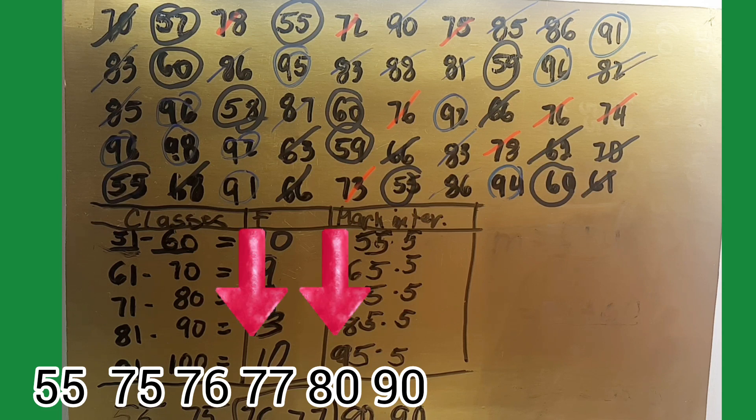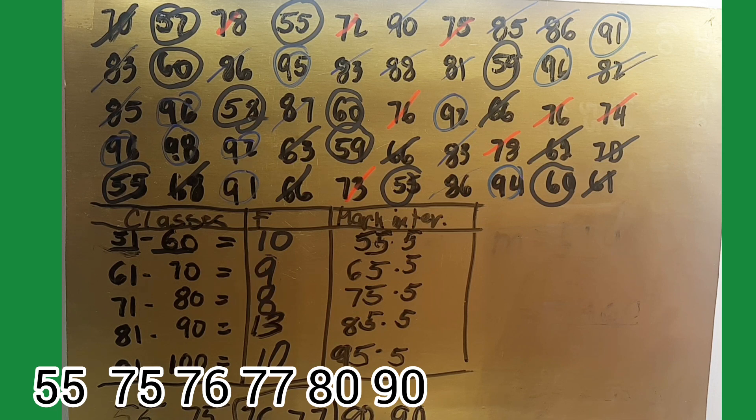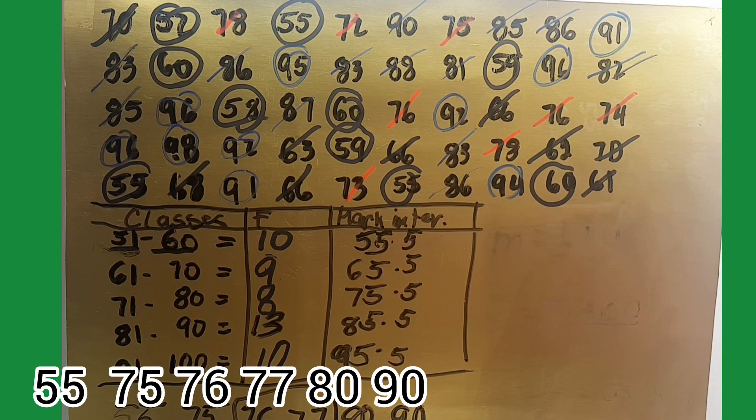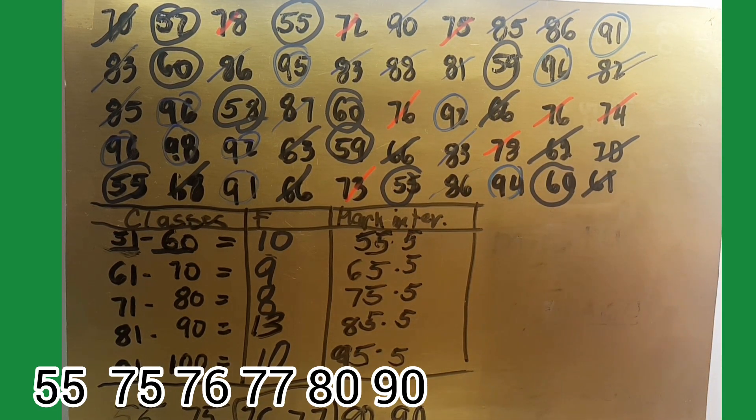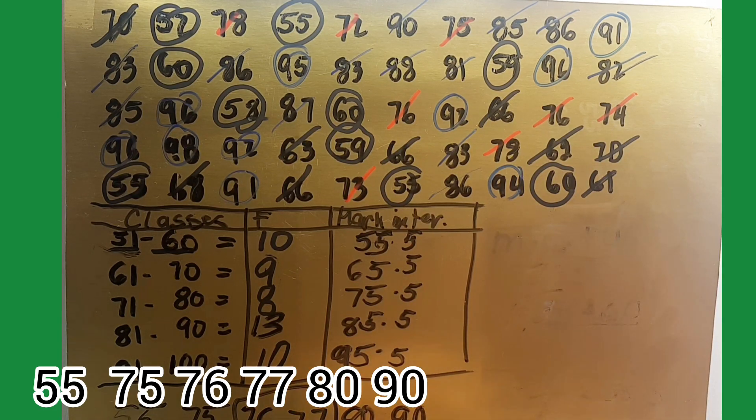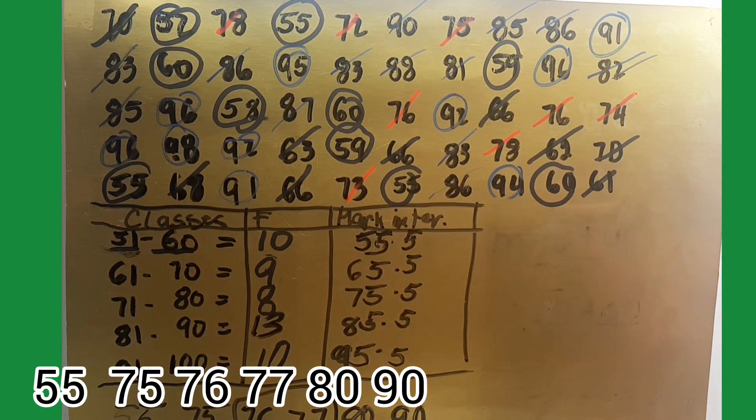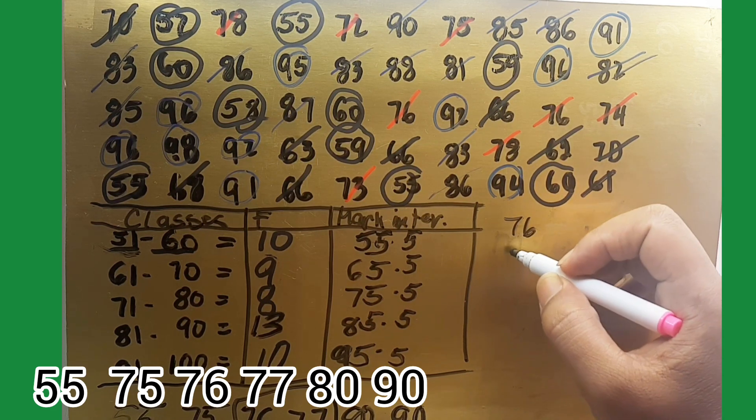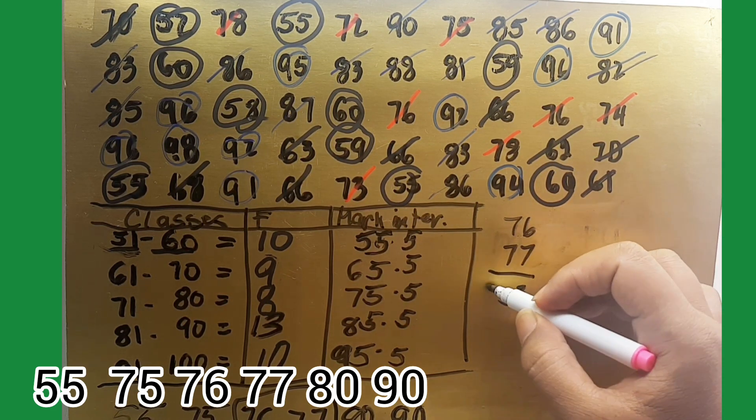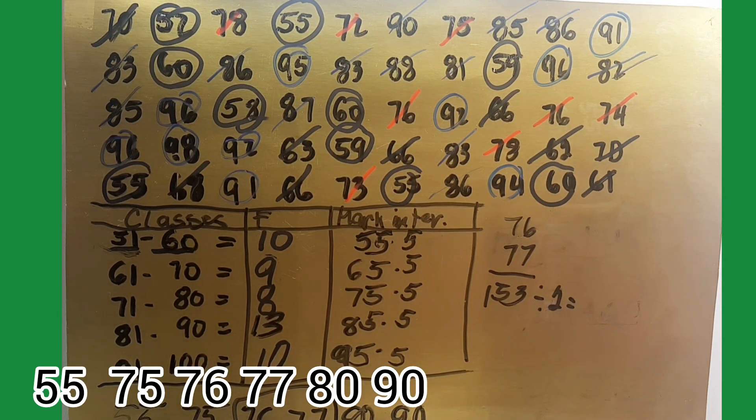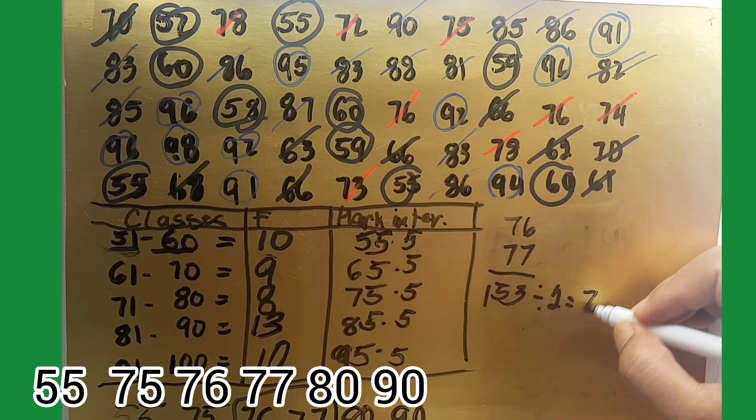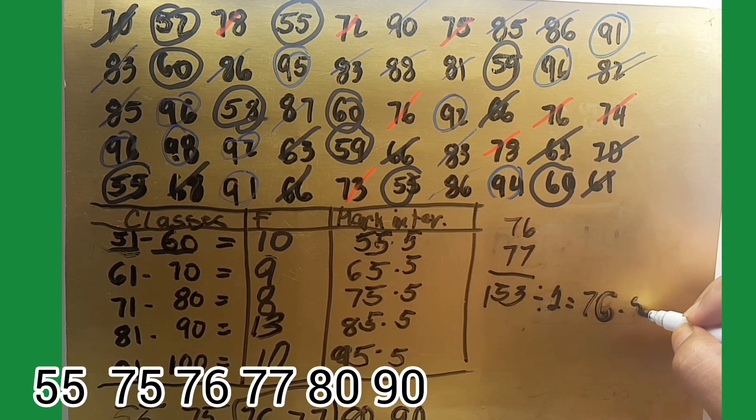We cannot apply mid interval equals lower limit plus upper limit because it is different. For example, how to get the median for this random number is to add the two numbers between the given numbers. So 76 plus 77 equals 153 divided by 2. So the answer will be 76.5.